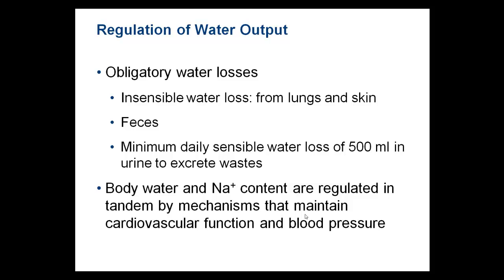We have obligatory water losses — water we must lose even in severe dehydration. These include insensible water loss from skin and lungs, some water lost in feces, and a minimum daily urine output of approximately 500 ml, which is needed to excrete waste. Some desert-adapted animals have evolved to excrete much less urine and produce highly concentrated urine as a result.